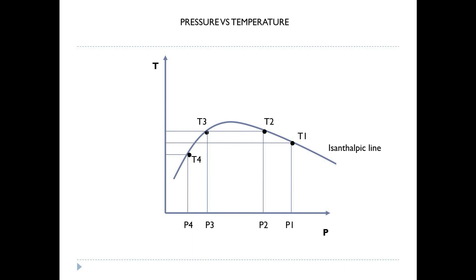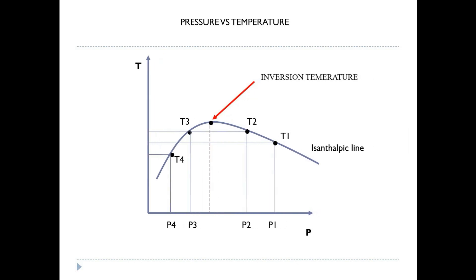Now, the maximum temperature in this curve is called as inversion temperature. In this curve, you may notice that if the pressure change occurs on the right-hand side of the inversion temperature, the temperature always falls.